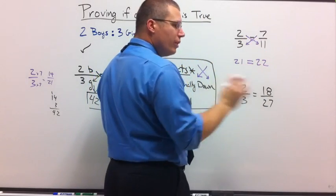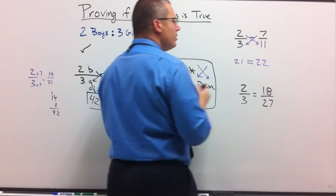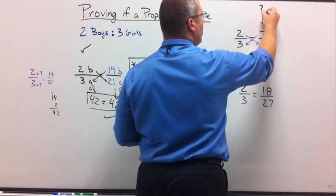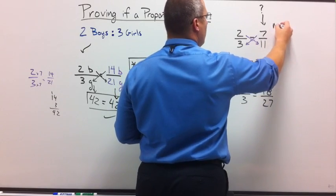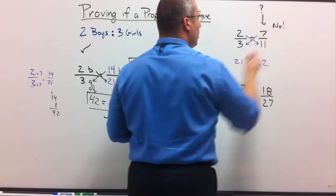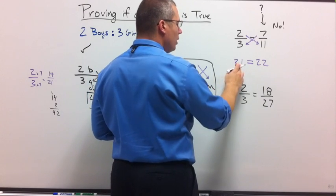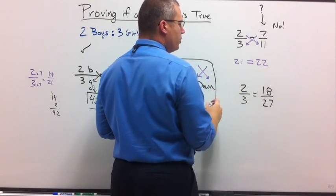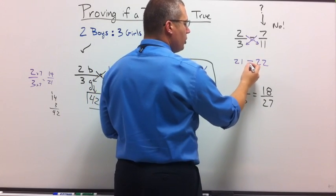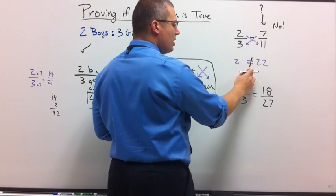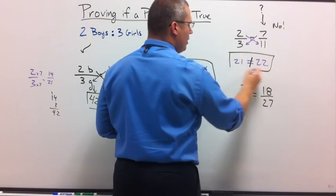Are these equal? No, they're not. So does 7 over 11 count as an equal ratio? Question mark. The answer is no, it doesn't. How do I show this? Algebraically, or algebra, is 21 equal to 22? No, it is not. How do I show no equal? Put a line through it. This is the not equal to sign. Put a box around it and I'm done.